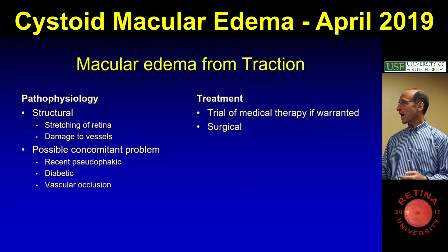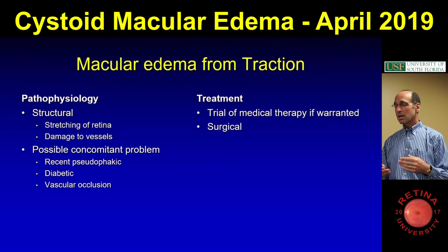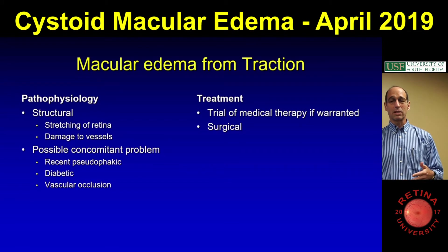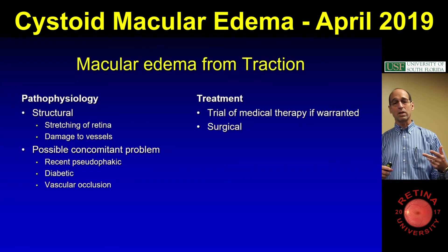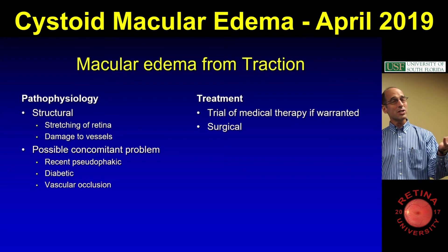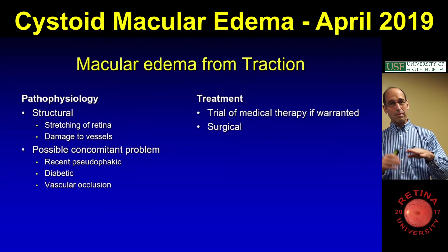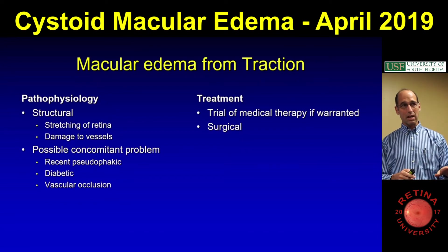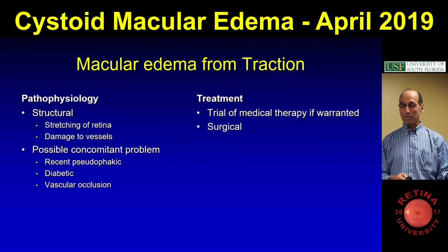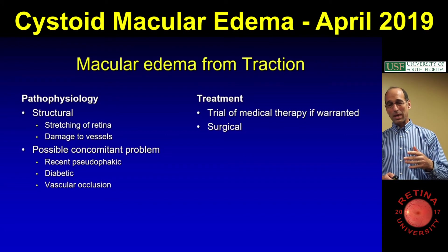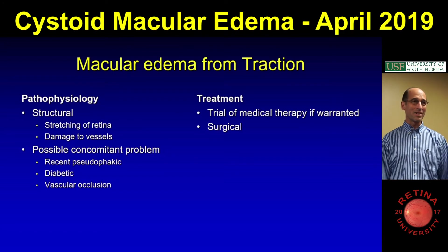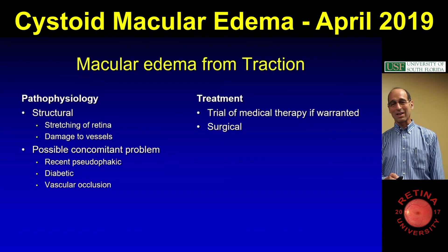So macular edema from traction is probably some stretching of the retina, but mostly damage to the vessels. You have to look at them for other problems — do they have diabetes, are they pseudophakic, is there a vascular occlusion? I did a case of a patient who had a macular pucker and macular edema. I gave them a posterior sub-Tenon's Kenalog shot, waited a month, it didn't get better, then I took the pucker off and it dried right out. But lately for patients with any macular swelling, I've been injecting Kenalog at the time of the vitrectomy — a belt-and-suspenders approach.